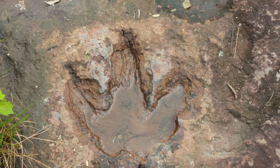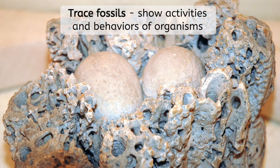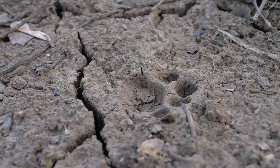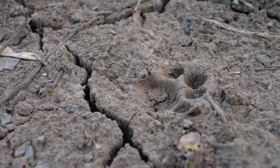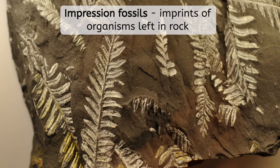Other fossils may not involve the remains of the actual organism, but give us insight into their activities and behaviors. Trace fossils, such as footprints, nests, burrows, and waste, can give paleontologists clues as to how long extinct organisms may have moved and raised young. These kinds of fossils often form when impressions made in mud or dirt quickly harden into rock and are preserved. Plants also frequently leave behind impression fossils that clearly show their leaf structure even at a microscopic level. Impression fossils are any case of a print of any kind of organism being left behind.